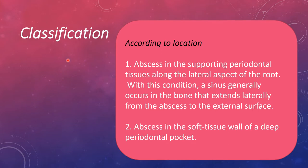Periodontal abscess has been classified according to various conditions. According to location, it has been classified into two types: first, abscess in the supporting periodontal tissues along the lateral aspect of the root, where a sinus generally occurs in the bone that extends laterally from the abscess to the external surface; second, abscess in the soft tissue wall of a deep periodontal pocket.